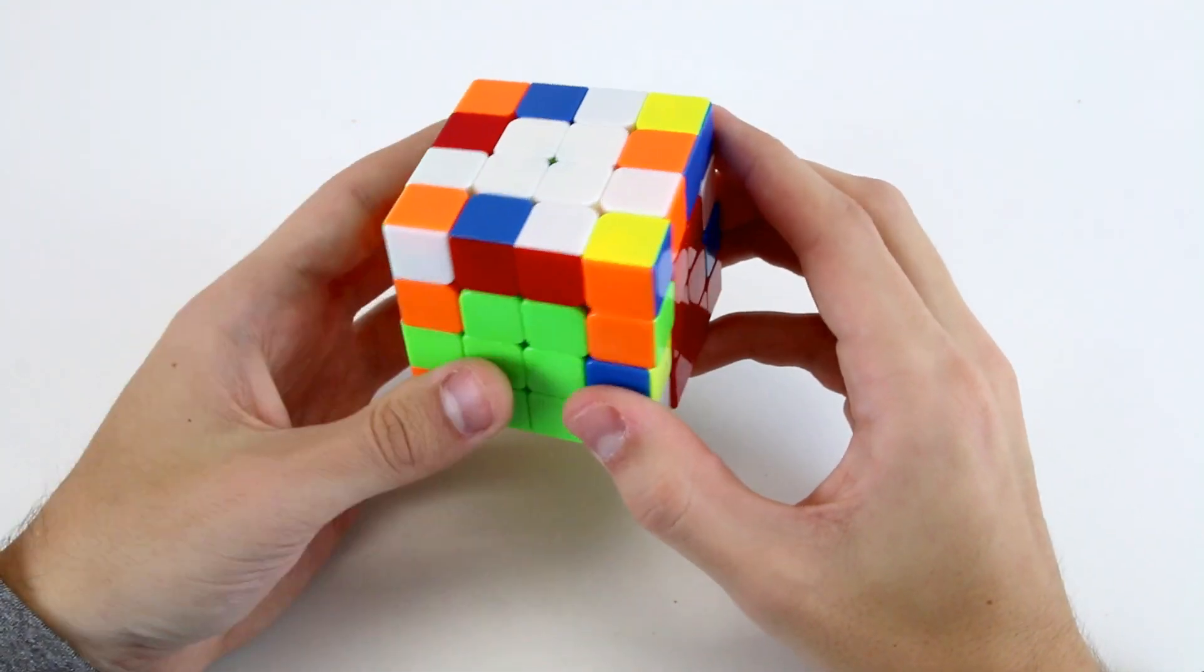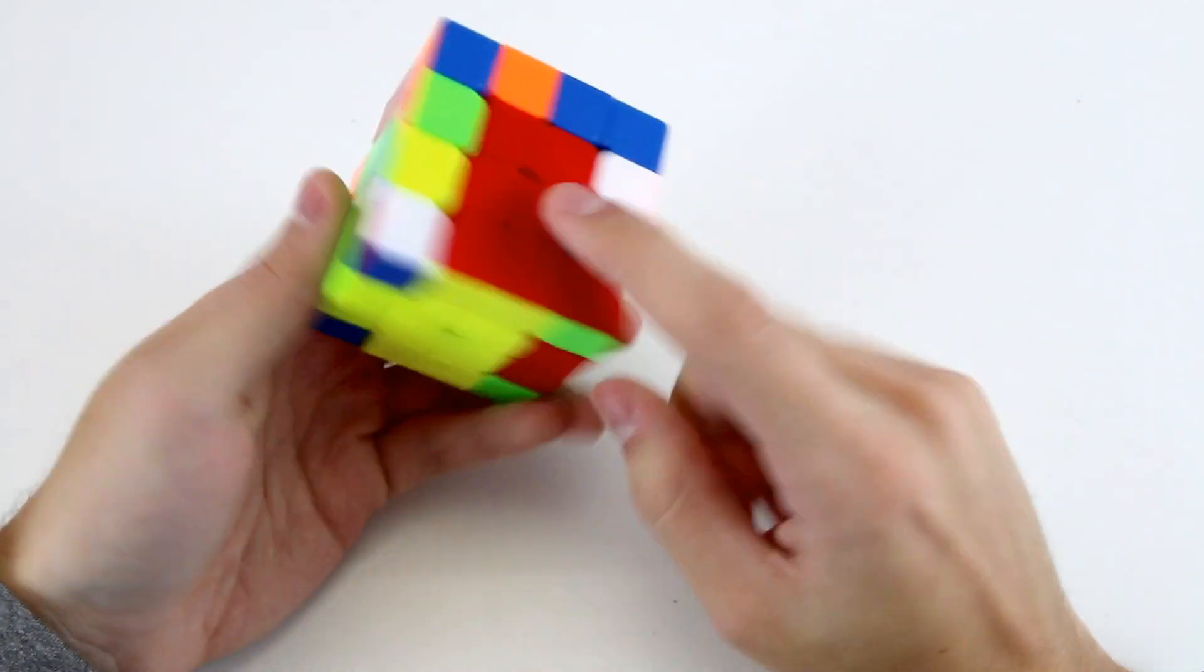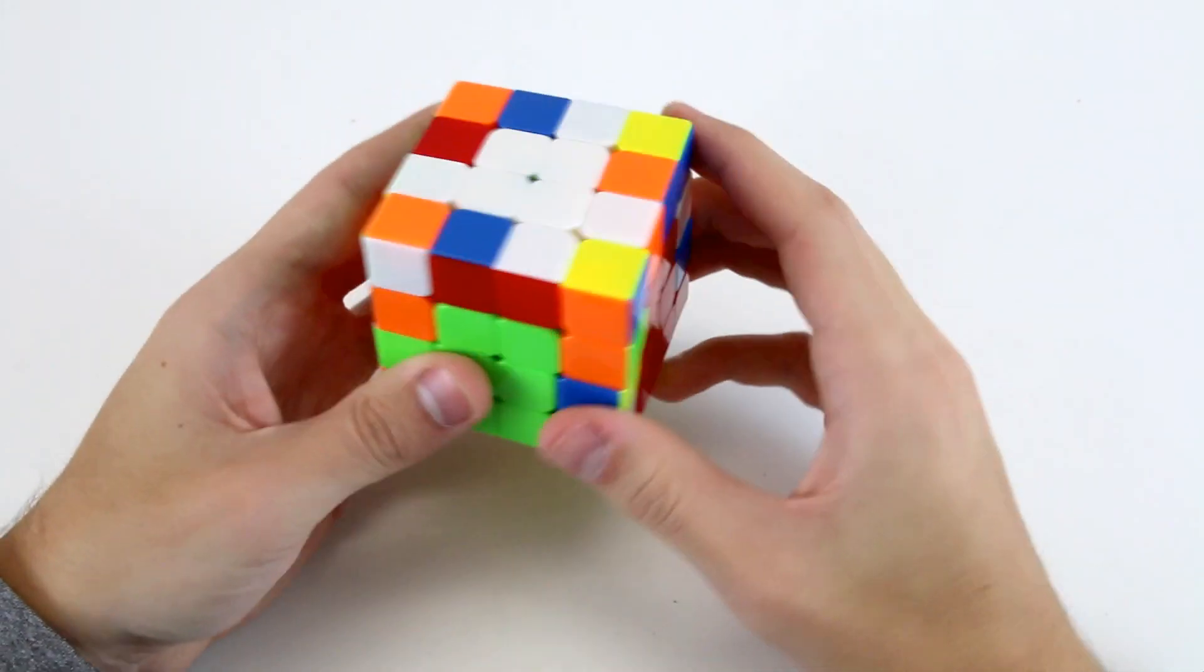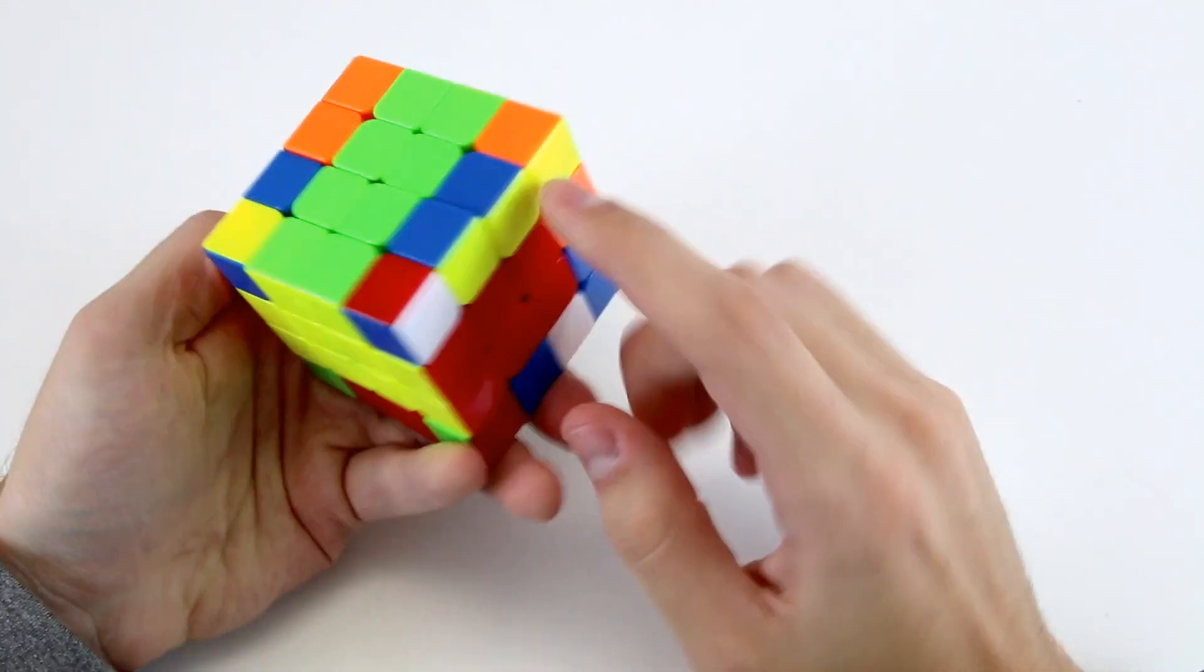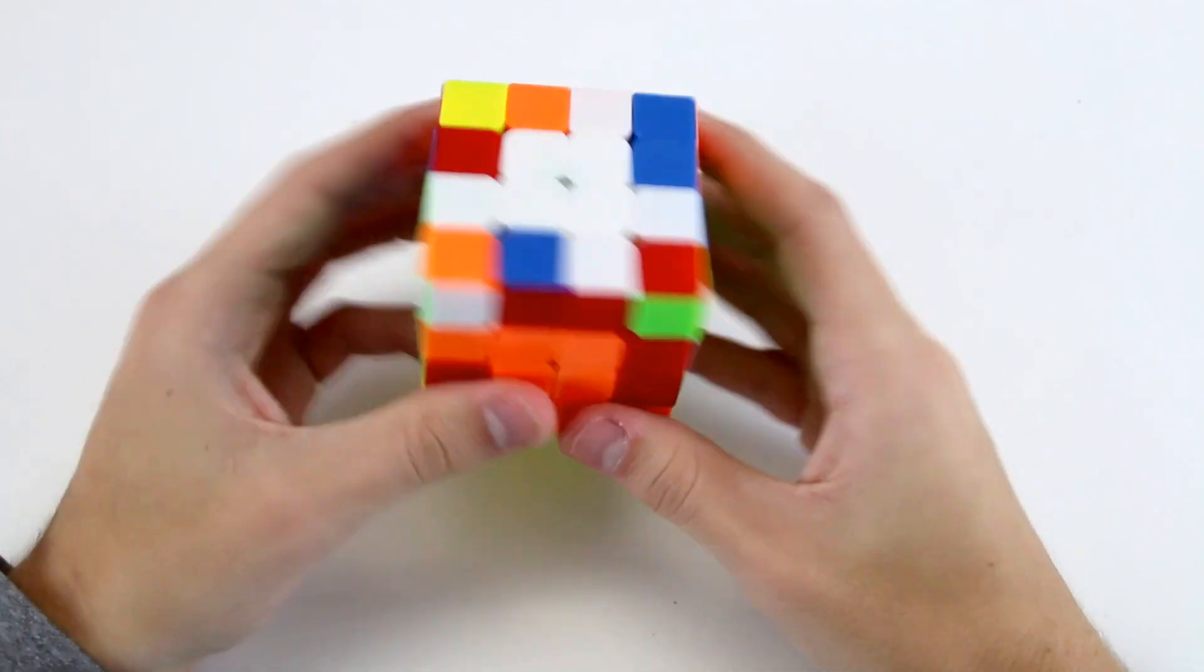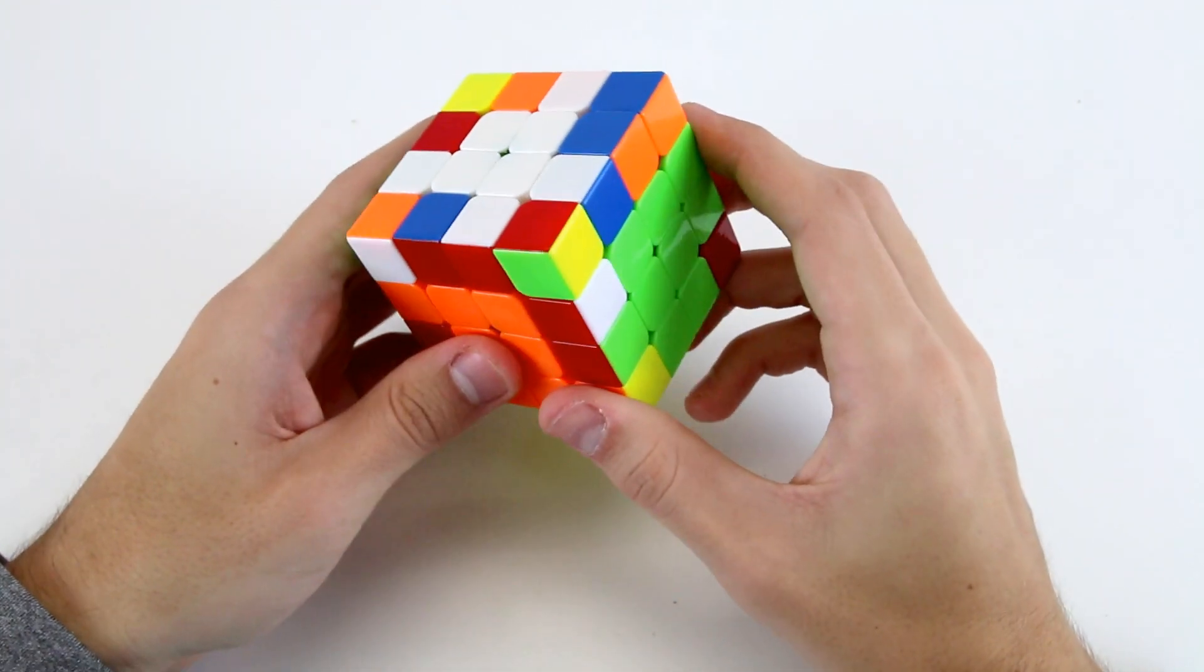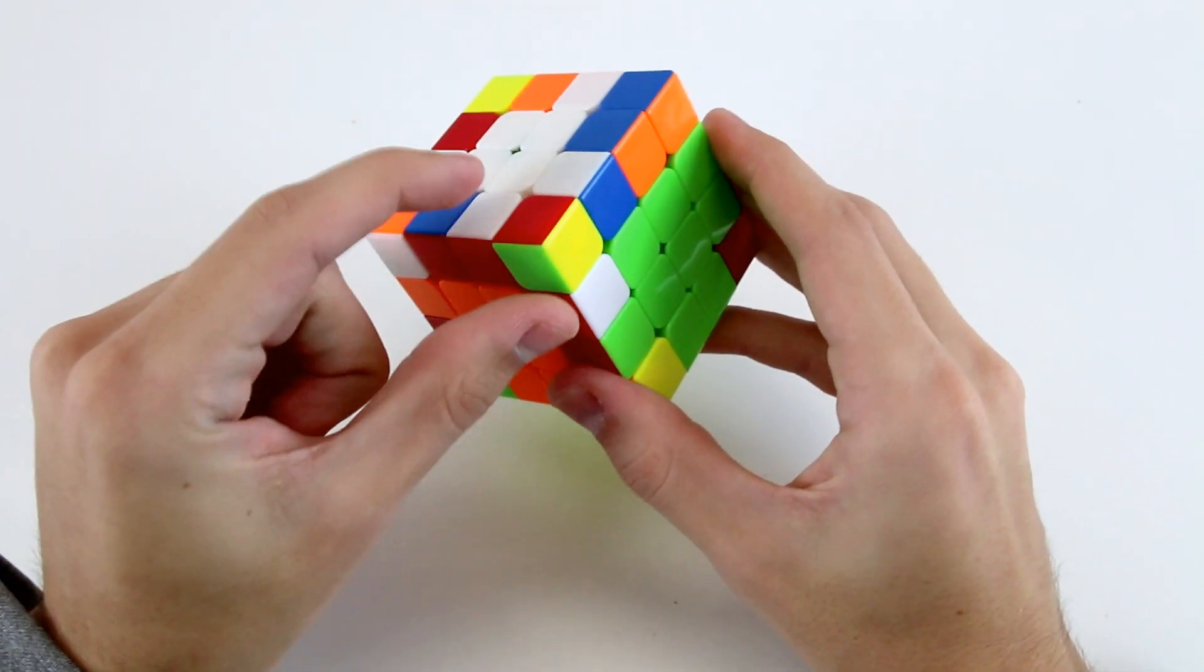Then for the last cross edge, I have a pretty bad case, sorry. I've got this one here and this one here. So I can do something like U, insert U prime, and then D2, R, D2, like that. And for my first slice move, I'm going to do a U prime, because I see this one and this one already.